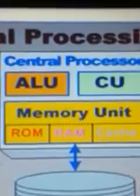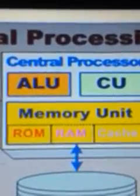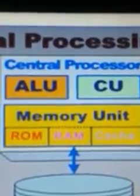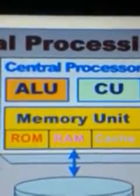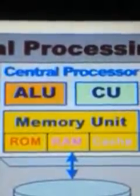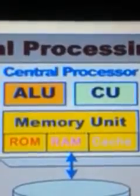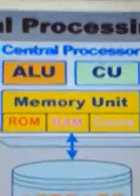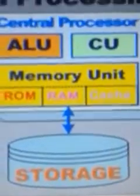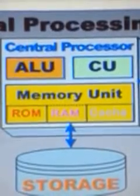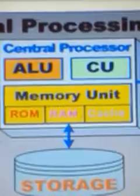RAM stands for random access memory. It is a temporary memory which stores programs temporarily to provide instructions to the microprocessor. It is the memory where programs come from ROM or storage, after which the instructions are sent through the processor.